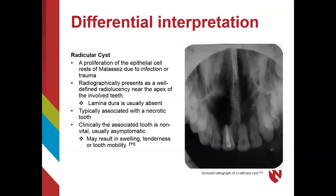Another differential diagnosis is the radicular cyst. These are considered odontogenic cysts and develop as a result of infection or trauma, which stimulates proliferation of the epithelial cell rests of Malassez. Radicular cysts usually present on a radiograph as a well-defined radiolucency near the apex of the involved teeth. Other radiographic characteristics include a lack of lamina dura and a widened PDL space. They are clinically associated with non-vital or necrotic teeth and are typically asymptomatic, though swelling, tenderness, or tooth mobility may also be seen. The image is an occlusal radiograph showing a large radicular cyst above tooth number 8, which is also endodontically treated.